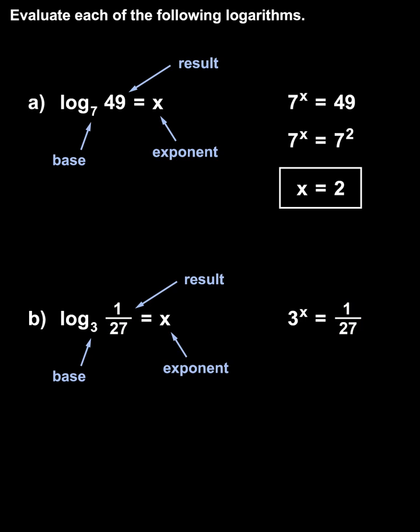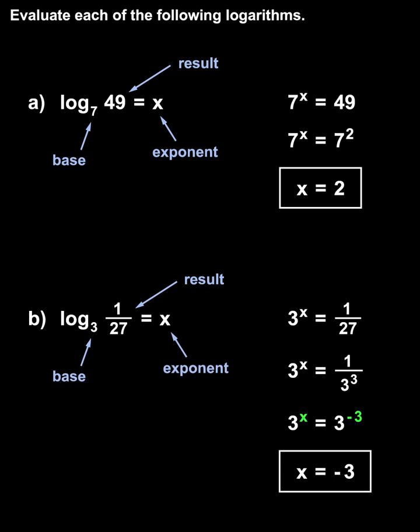Next, we solve for x. Notice that 3 and 1/27 have a like base of 3, so we rewrite 1/27 as 1 over 3 cubed. And we have 3 to the x equals 1 over 3 cubed. Now, 1 over 3 cubed is the same thing as 3 to the negative 3, so we have 3 to the x equals 3 to the negative 3, which means x must equal negative 3.